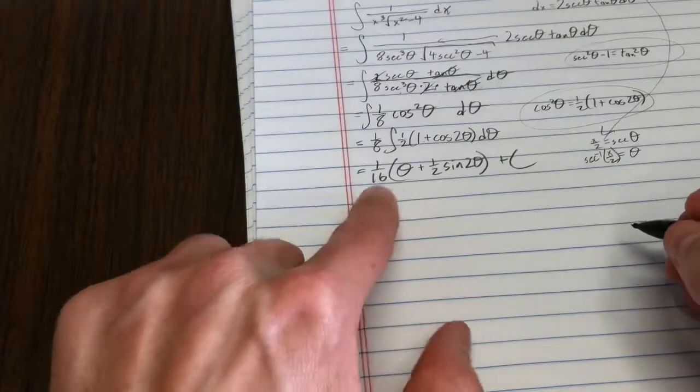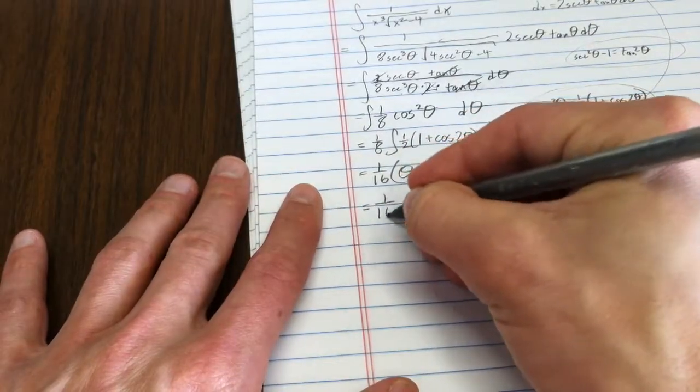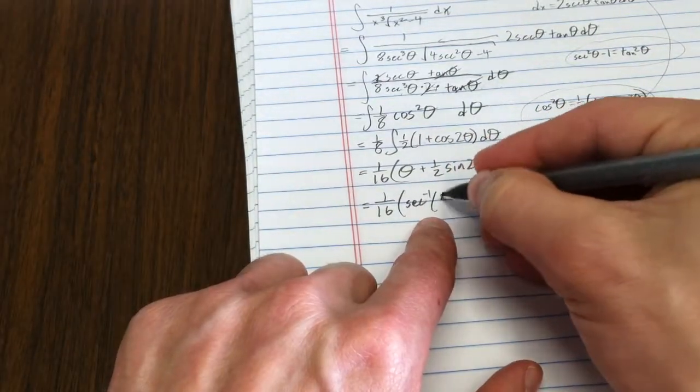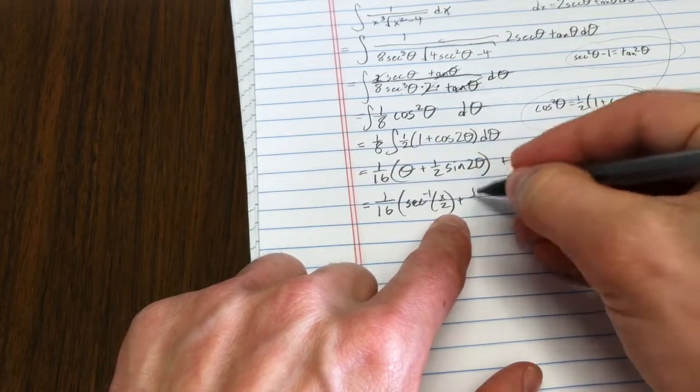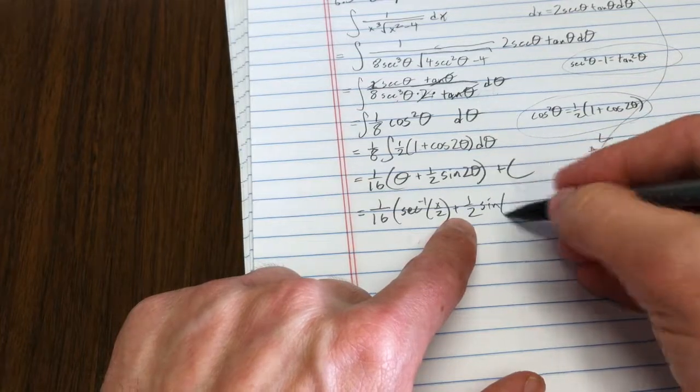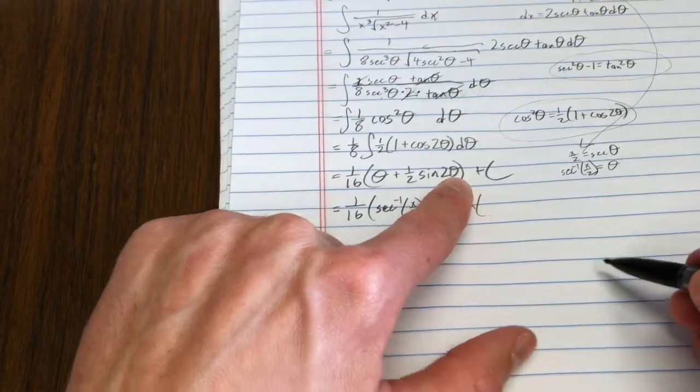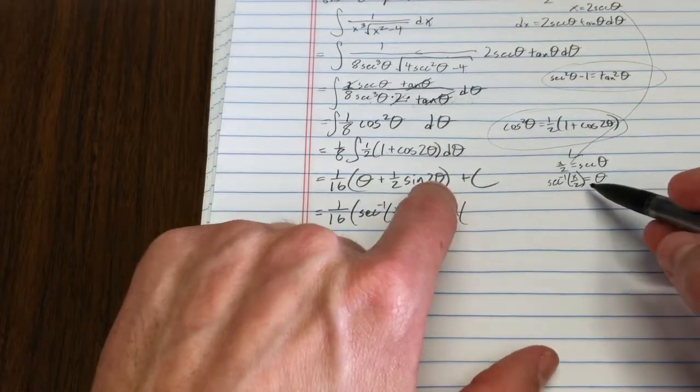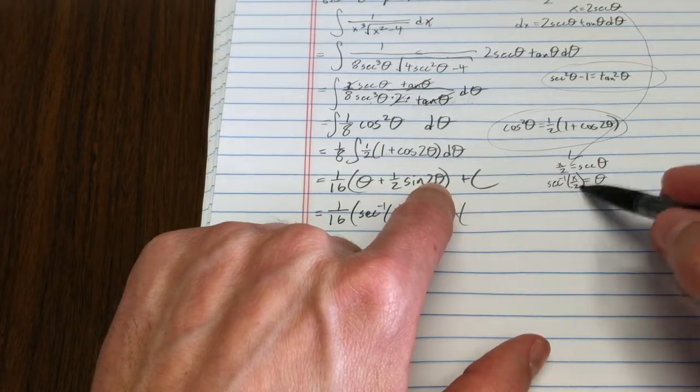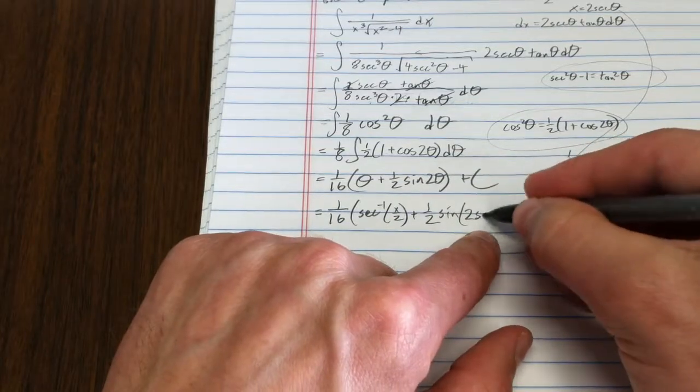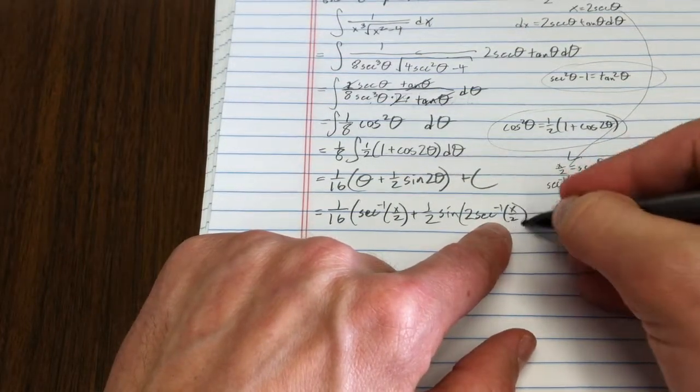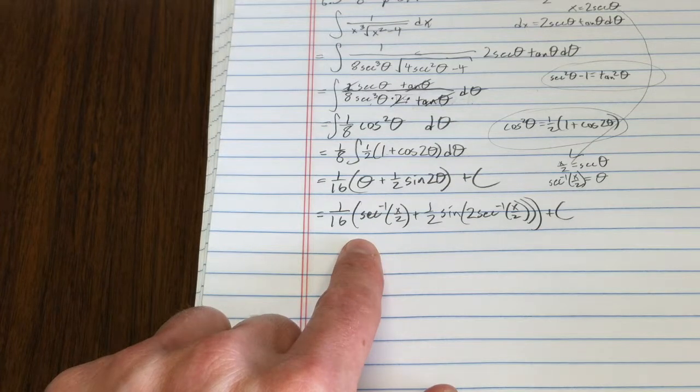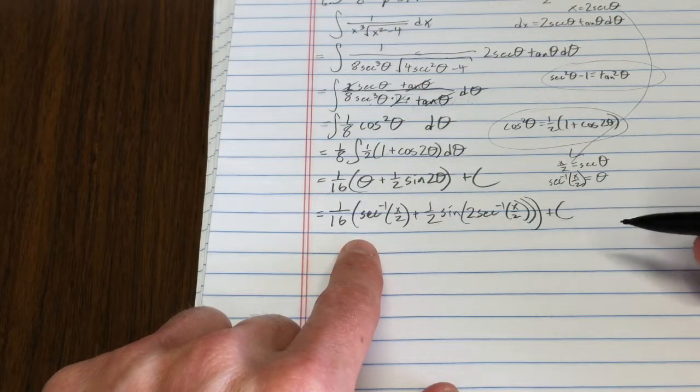So, we can actually put that in here. 1 sixteenth arc secant of x over 2 plus 1 half sine of... Now, if it were just a theta, I could work back from the reference triangle. But, because of that 2, notice what I'm going to have. I get 2 theta. That's 2 times arc secant of x over 2. There we go. Looks pretty complicated, but think how much more complicated it would be if we didn't have trig substitution.